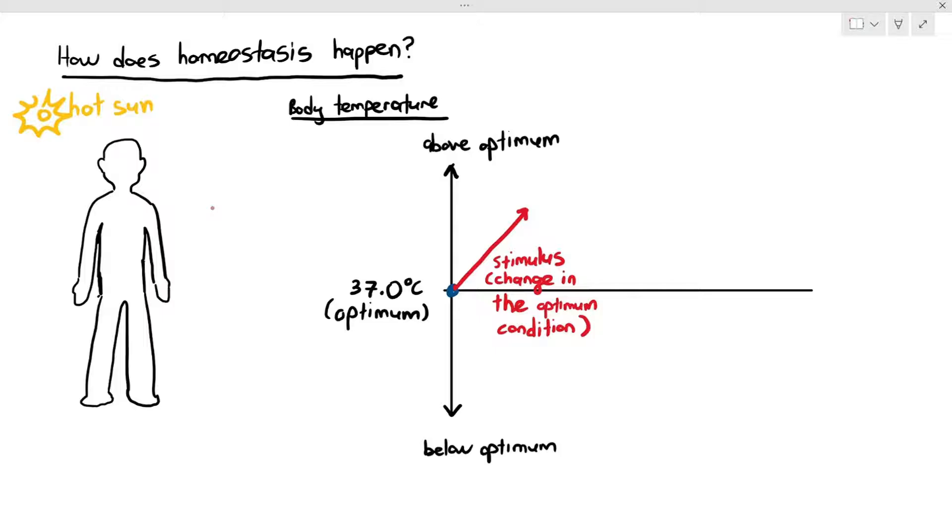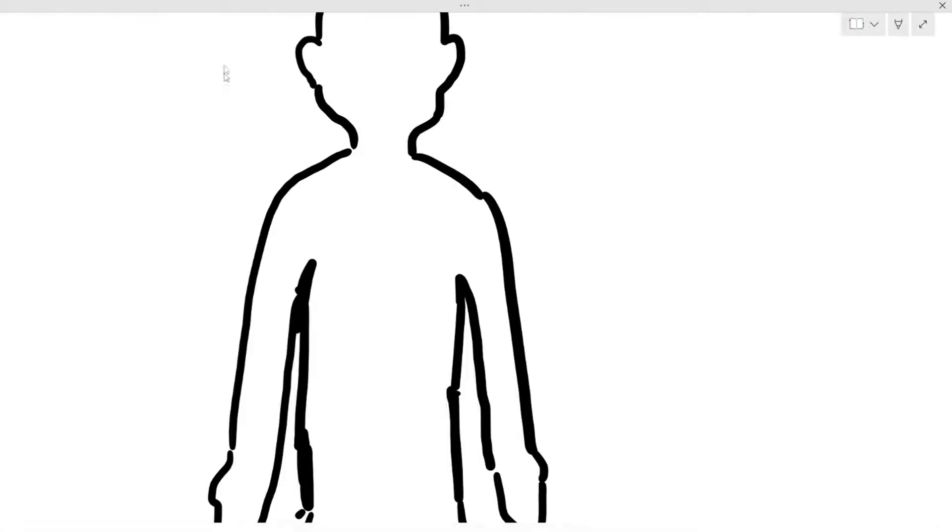Now that is referred to as a stimulus. So what exactly is the meaning of a stimulus? In this case, the meaning of a stimulus in this situation is just a change in the optimum condition. So that means the body has gone through a deviation or it has kind of gone beyond the optimum level and that's not good. So in this situation, what happens is when the heat is absorbed by our skin, the good news is our skin has these things called receptors. So what exactly are receptors? Receptors are just things that detect the stimulus. Stimulus is just the change.